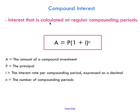Compound interest is a more realistic type of interest that you'll see in the real world. This is where interest is calculated at regular compounding periods. So instead of just lending money and only charging interest over time, you lend out your money, charge interest for some period, and then you charge interest on that interest. This is a smarter way of charging interest for people giving out loans, because you're making more money by charging interest on the interest.